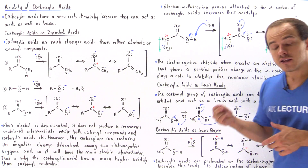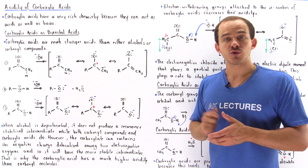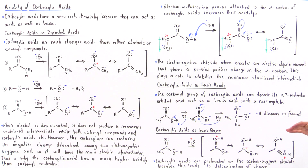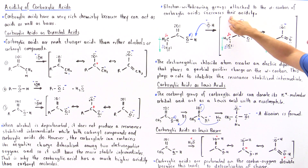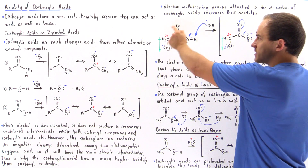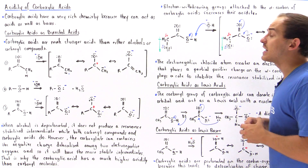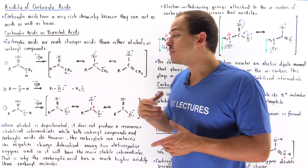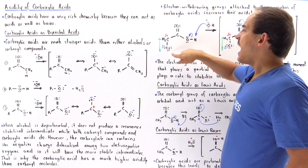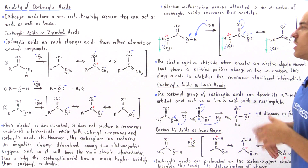We can actually increase the acidity of a carboxylic acid and decrease its pKa by adding electron-withdrawing groups or electron-withdrawing atoms onto the alpha carbon. Electron-withdrawing groups attached to the alpha carbon of carboxylic acids increase their acidity. For example, if we replace one of the H atoms on the alpha carbon with an electron-withdrawing group such as a chloride, notice that because chloride is more electronegative than carbon, it withdraws electron density from that carbon, placing a partial positive on the carbon and a partial negative on the chloride. This creates an electric dipole moment pointing from the carbon toward the chloride atom.